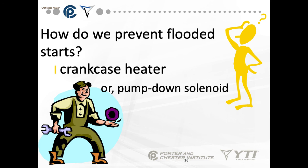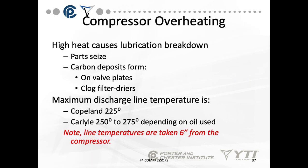Be careful of flooded starts in colder environments. For a cold ice chest in a cold outdoor environment in refrigeration, use a pump-down solenoid. For a heat pump in a cold environment, consider a crankcase heater. Keep liquid refrigerant out of the compressor. Compressor overheating causes lubrication breakdown, parts to seize, carbon deposits on valve plates, and clogged filter dryers. Maximum discharge line temperature for Copeland compressors is 225°F; for Carlyle compressors, 250° to 275°F depending on oil used. Line temperatures are always taken six inches from the compressor to get the actual refrigerant temperature, not the compressor body temperature.